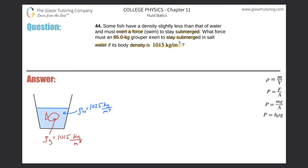To find that force, we start with the key idea: if the fish is totally submerged, the volume of the grouper must equal the volume of the salt water displaced. This is the crux of Archimedes' principle — we've covered this in detail in problem number 40.